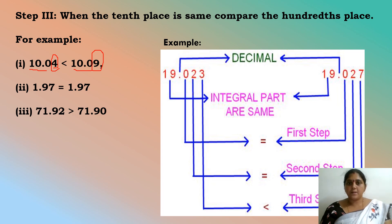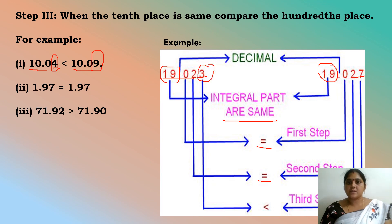See the example: compare 19.023 and 19.027. First compare the whole number part — 19 equals 19, both are the same. Then the tenths place — also equal. Then the hundredths place — also equal. Then the thousandths place: here it is 3 and here it is 7. Since 3 is less than 7, 19.023 is less than 19.027.